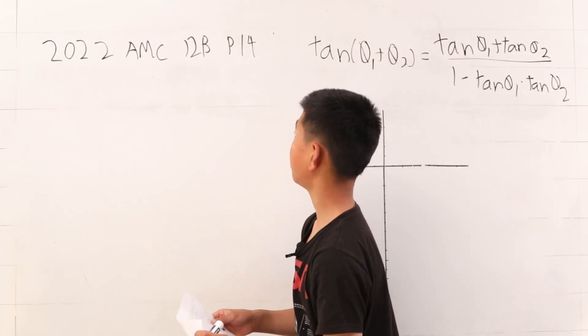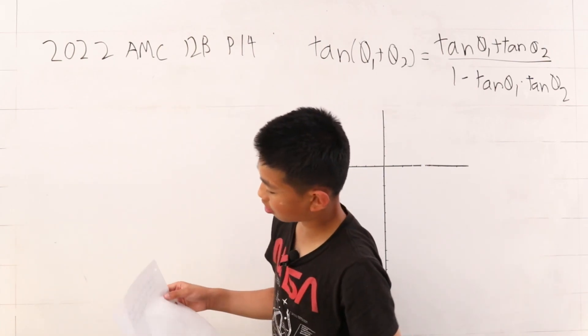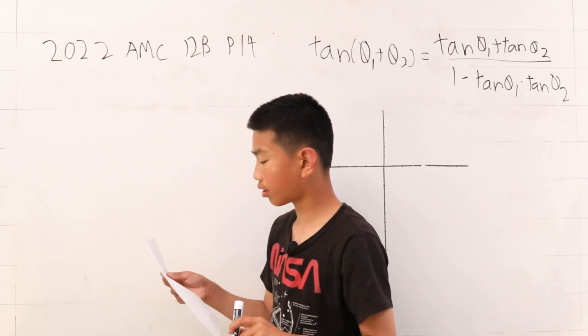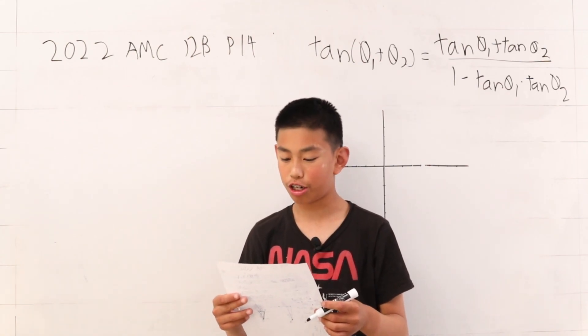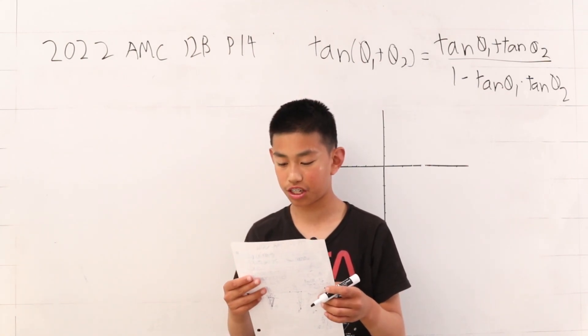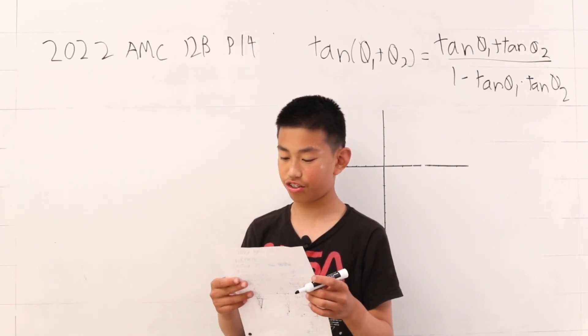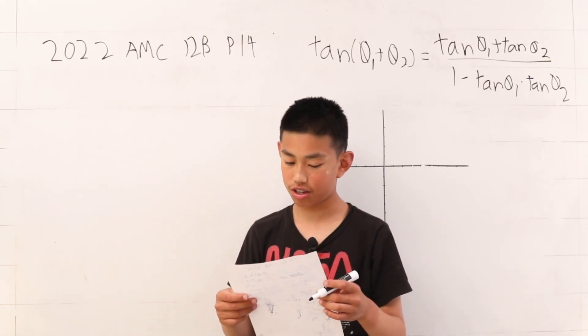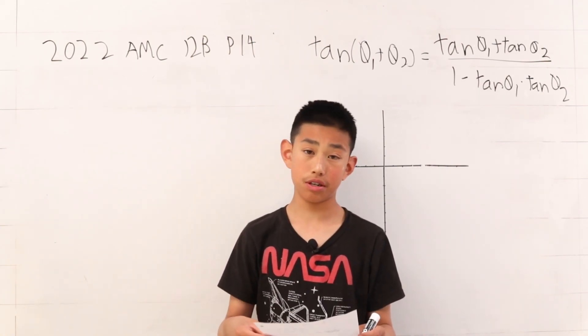Today, I'm going to explain problem 14 of the AMC 12B of 2022. The graph of y equals x squared plus 2x minus 15 intersects the x-axis at points A and C and the y-axis at point B. We want to find the tangent of angle ABC.